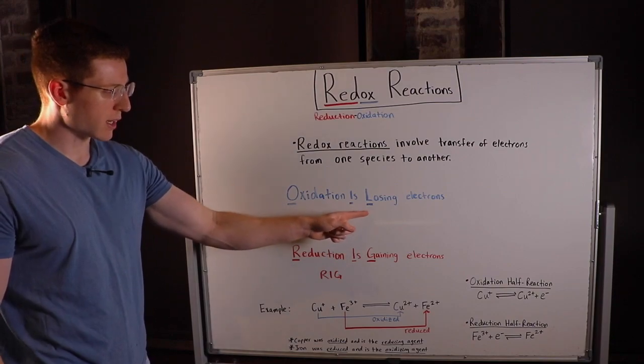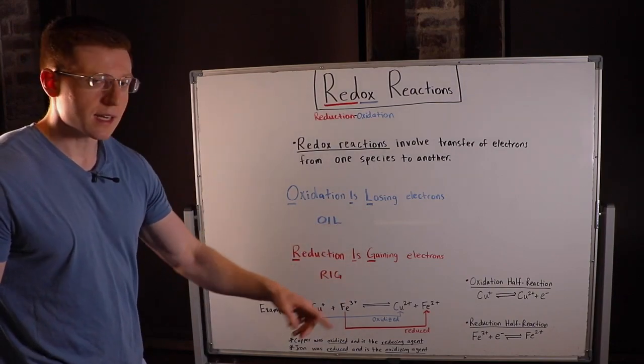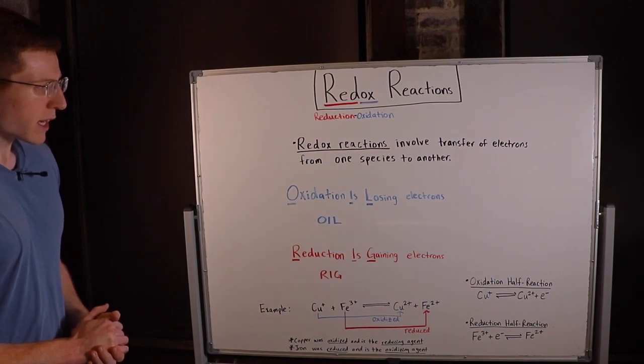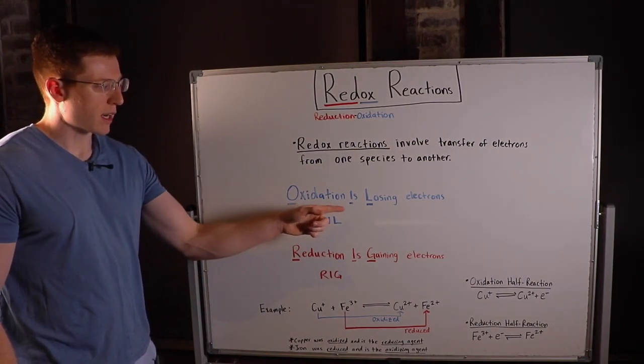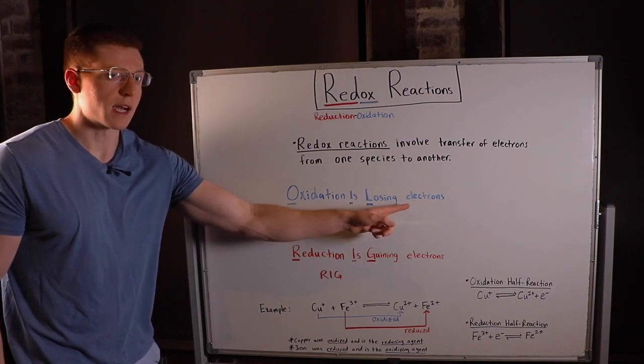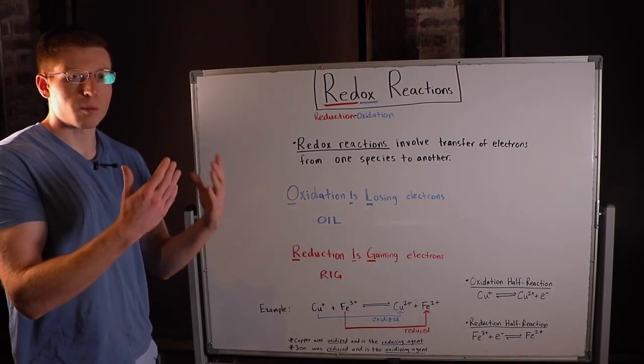Oxidation is losing, reduction is gaining electrons. You can imagine electrons have negative charges. So if you were to become oxidized and you lost a negative charge, your charge would become more positive.